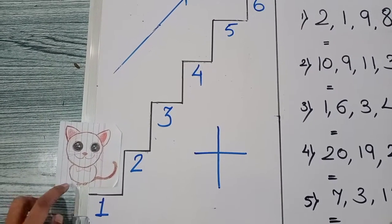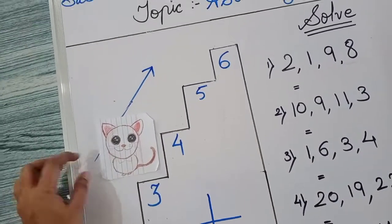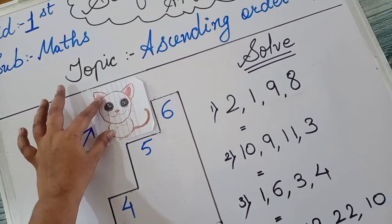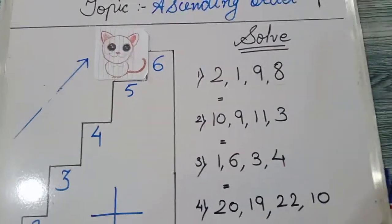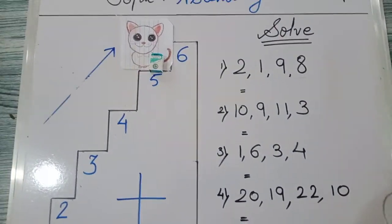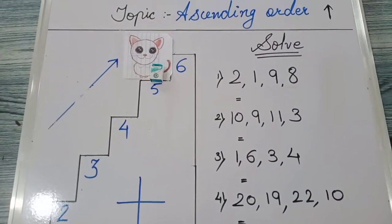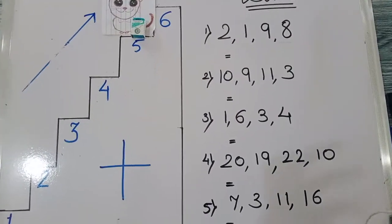After that, this cat is jump karene wali hai. 1, 2, 3, 4, and 5. The cat is on fifth stair. So that means, this cat nae kya kya kiya hai? This cat oopper chadi hai. This cat oopper aai hai.